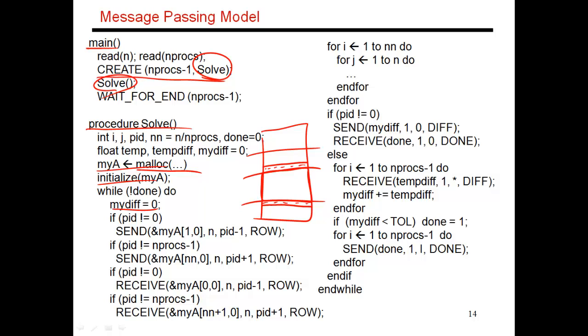So I send a message to my neighbors asking them to send me the most recent copies of those two rows. So I send a request to my previous thread, PID minus 1, and a request to my next thread, PID plus 1, asking them to send me a row of data. And then I do a receive operation to receive those two rows from my neighbors.